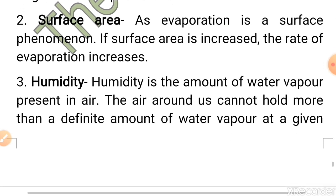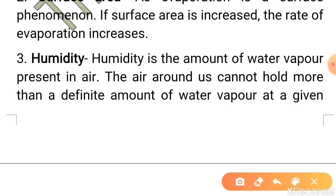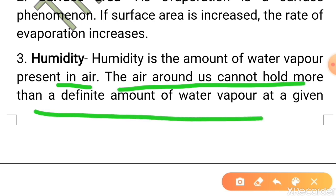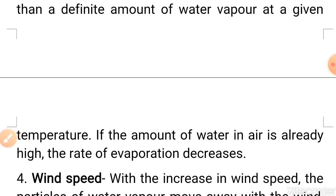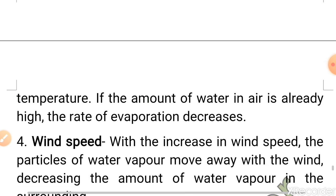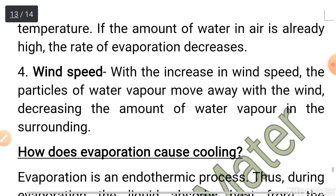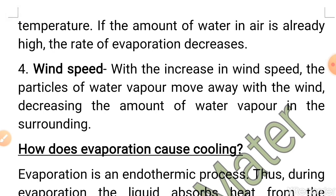Next is humidity. Humidity is the amount of water present in the air. The air around us cannot hold more than a definite amount of water vapor at a given temperature. So if the amount of water in the air is already high, the rate of evaporation decreases. Lastly, wind speed — with an increase in wind speed, particles of water vapor move away with the wind, decreasing the amount of water vapor in the surrounding, which is why wind speed increases the rate of evaporation.